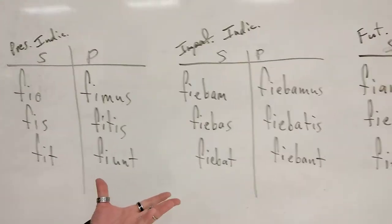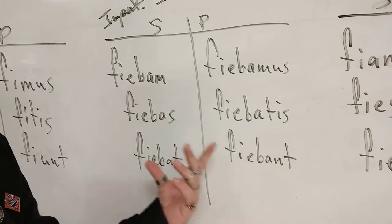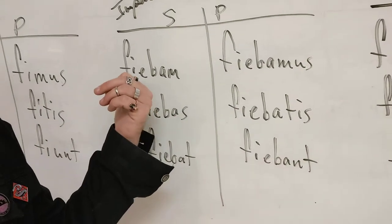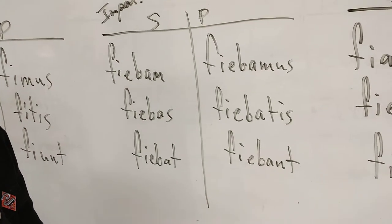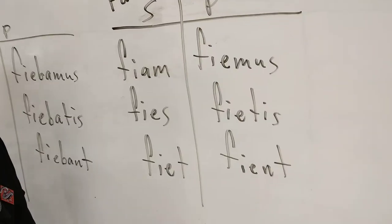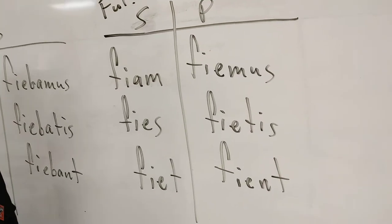And that's going to be true no matter what we look at. If we look at the imperfect, same deal - there's nothing weird about the way this imperfect verb is spelled. Or even in the future, the future is done as if it were any old third io or fourth conjugation future verb.